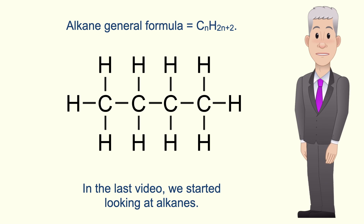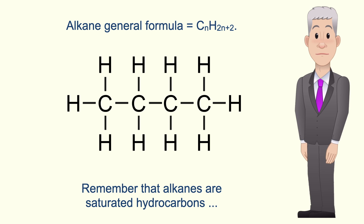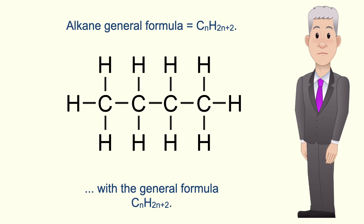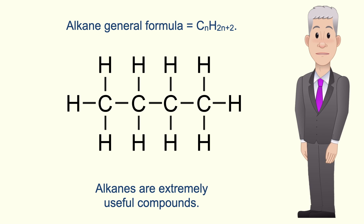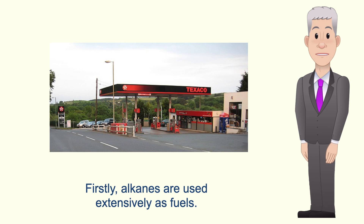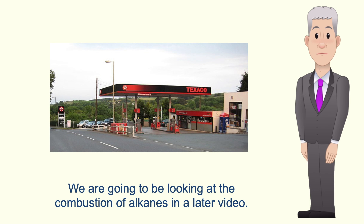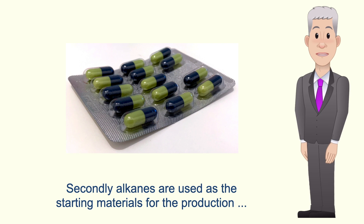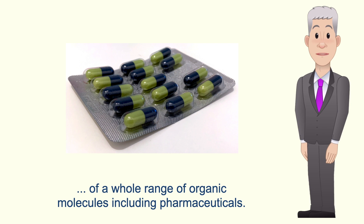In the last video we started looking at alkanes. Remember that alkanes are saturated hydrocarbons with the general formula CnH2n+2. Alkanes are extremely useful compounds. Firstly, alkanes are used extensively as fuels, and we're going to be looking at the combustion of alkanes in a later video. Secondly, alkanes are used as the starting materials for the production of a whole range of organic molecules including pharmaceuticals.